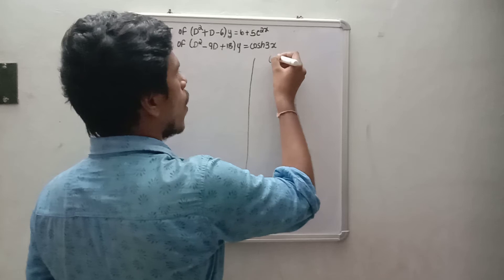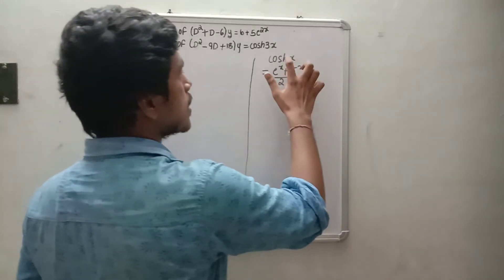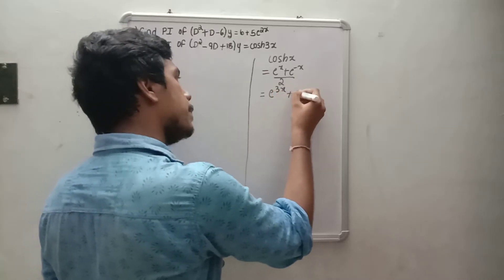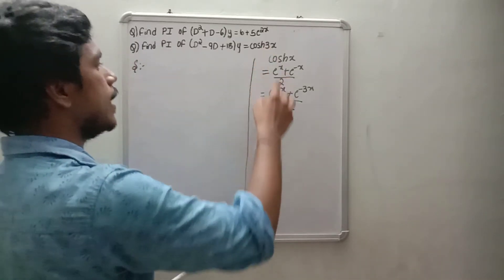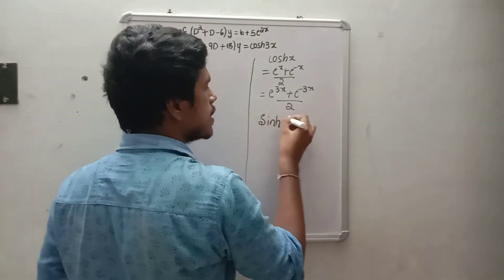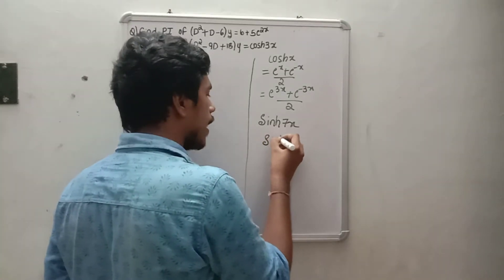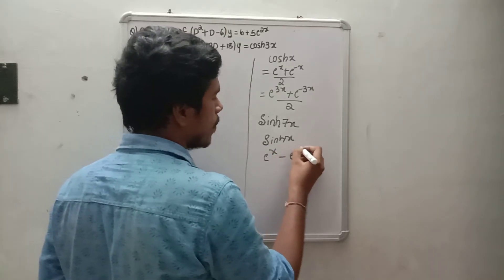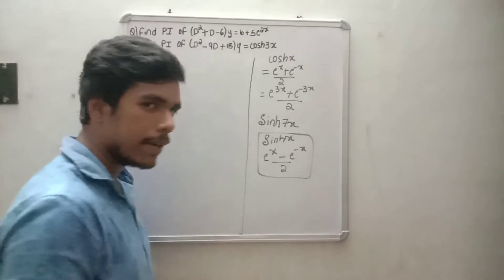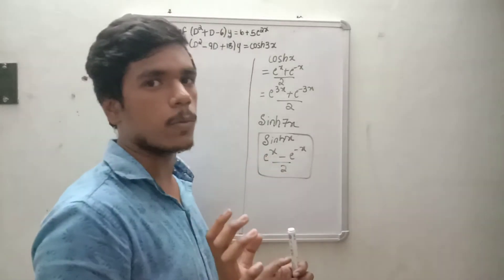cos h(x) is equal to e to the power x plus e to the power minus x, divided by 2. Similarly, sin h(x) formula is e to the power x minus e to the power minus x, divided by 2. So sin h(7x) is e to the power 7x minus e to the power minus 7x, divided by 2. This is the basic formula.